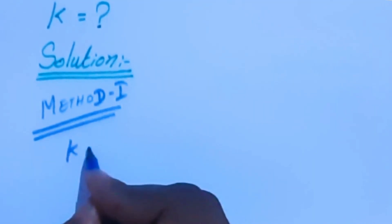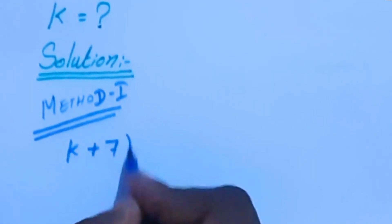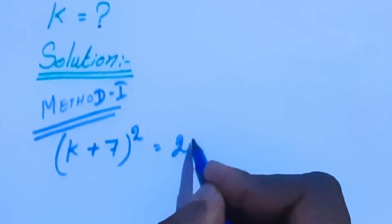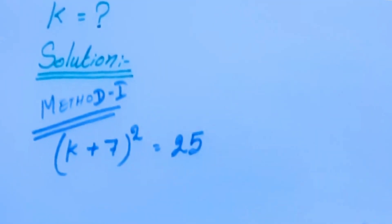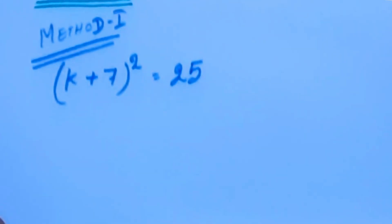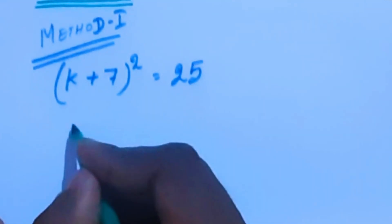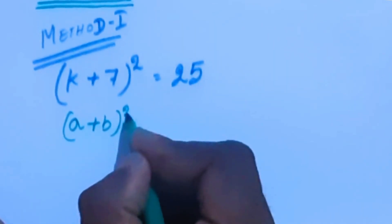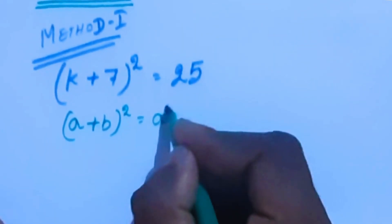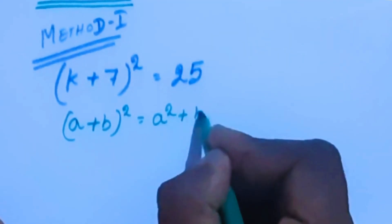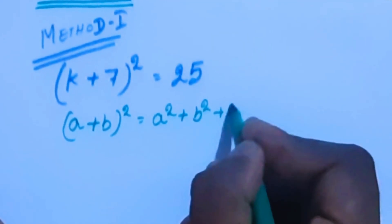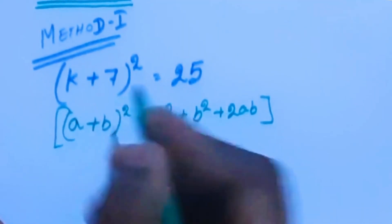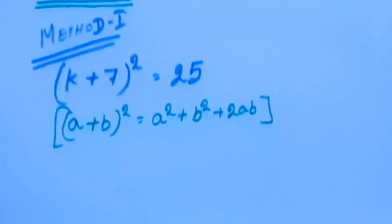k plus 7, whole power 2, equal to 25. Now we are going to apply the algebra formula: (a + b) whole square equal to a squared plus b squared plus 2ab. This formula we are going to apply here in the first method.